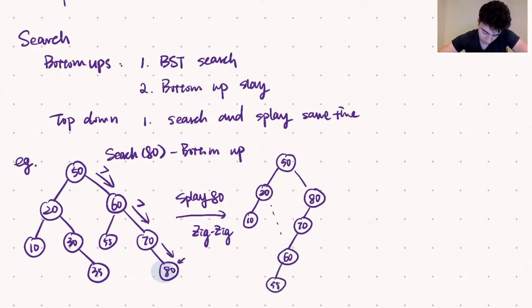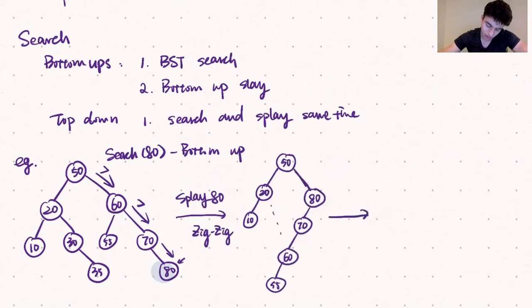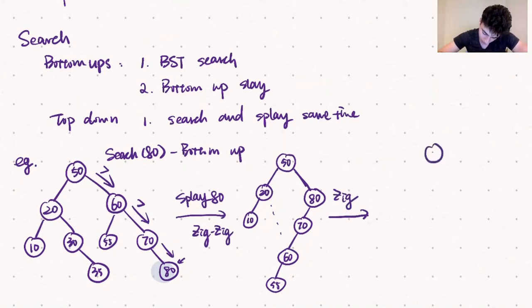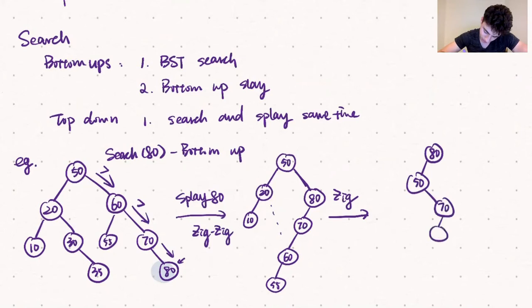Now that 80 is one level below the root of the tree, we need to reevaluate what kind of rotation to make. We need a zig rotation here, so we do one left rotation at 50, bringing 80 to the root of our tree, with left child 50, whose right child is the subtree rooted at 70 with its corresponding left subtree, and 50's left subtree remaining the same.